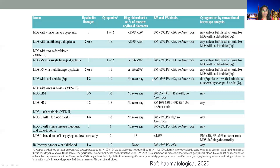This is a long list of different classifications. First, we need to look at how many lineages are involved. If there is single lineage dysplasia, these patients will have dysplasia in one lineage and can have one or two different types of cytopenias. In the bone marrow we see less than 5% or less than 15% ring sideroblasts. Bone marrow blasts are less than 5% and peripheral blasts are less than 1%. These patients don't have any Auer rods, and cytogenetics can be normal or abnormal.